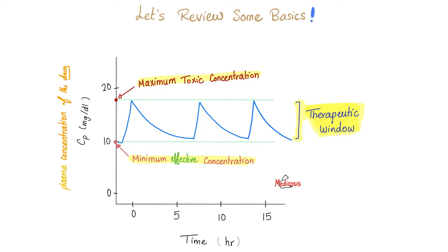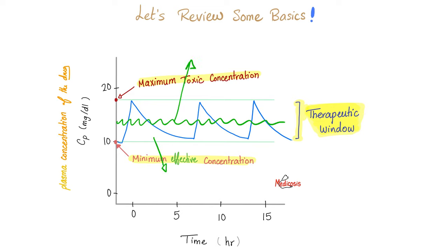The upper limit of the therapeutic range is the maximum toxic concentration, and the lower limit is the minimum effective concentration. Between them is the therapeutic window. If you go above the upper limit, this is toxic. If you give too little, below the minimum effective concentration, the drug is useless and will not produce the desired effect.